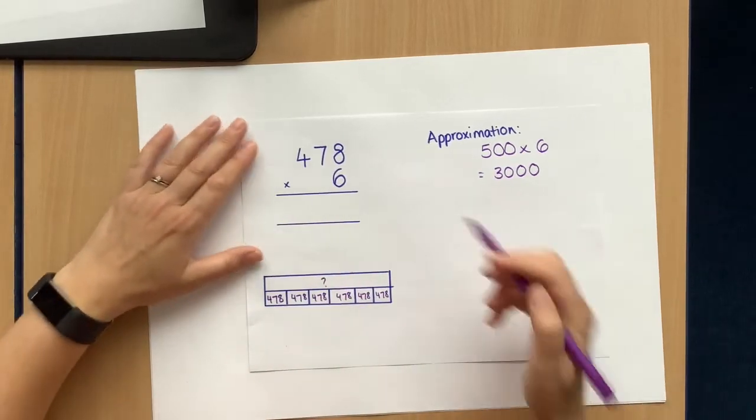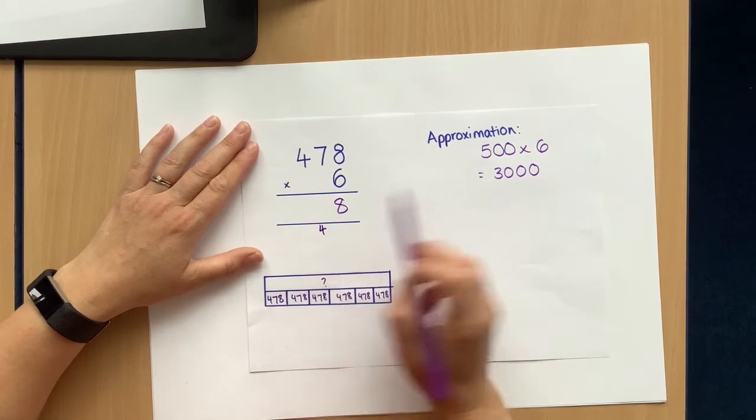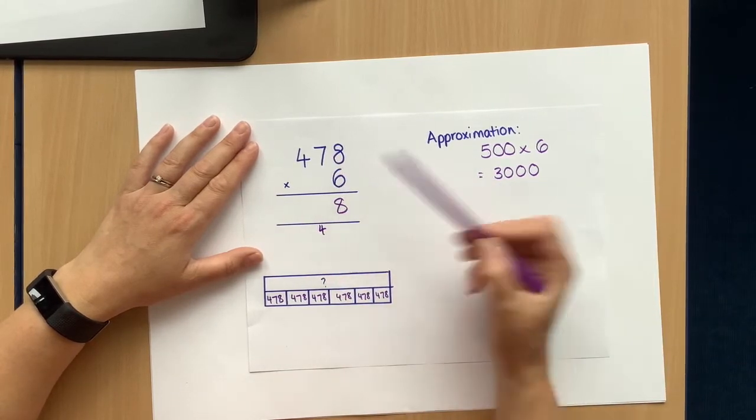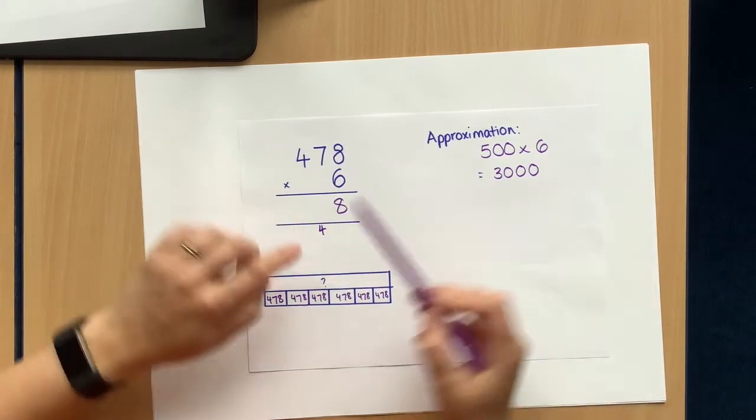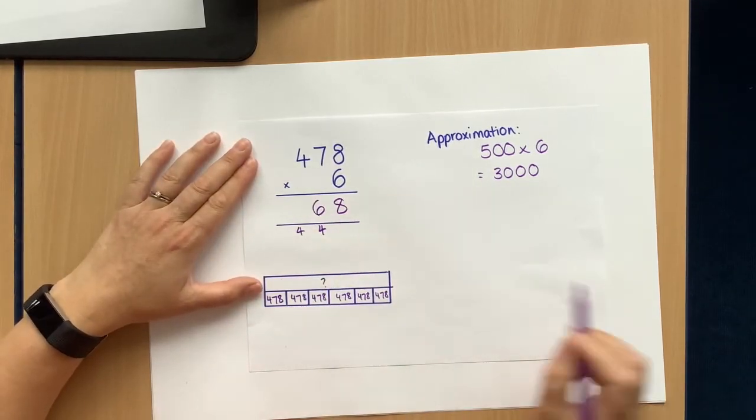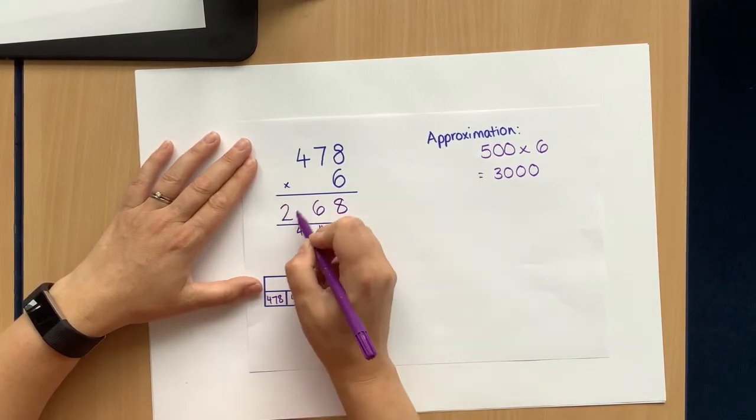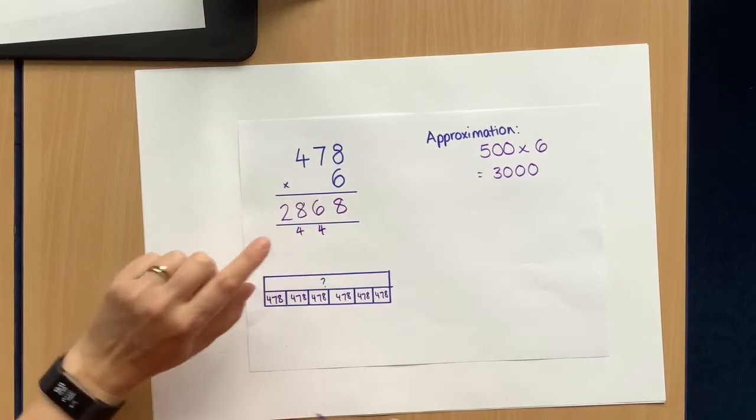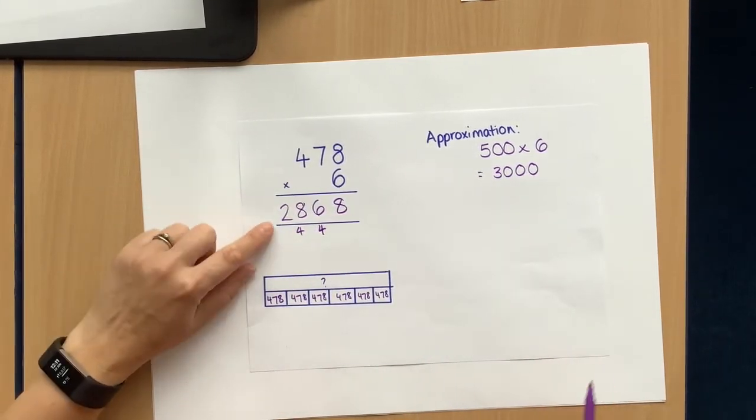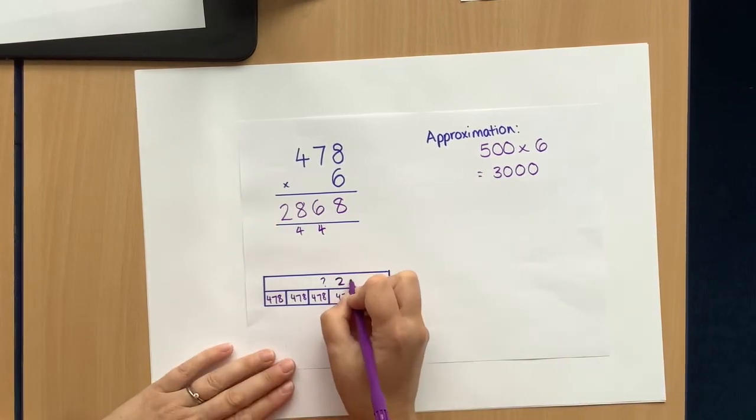I need to find the answer. So 6 times 8 is 48, which is 4 tens and 8 ones. 7 tens times 6 is 42 tens. Add those 4 tens, it gives us 46 tens, which is 400s and 6 tens. 4 hundreds times 6 is 24 hundreds. Add those 400s, it gives us 28 hundreds, which is 2 thousands and 8 hundreds. So I think that's the answer. The approximation looks about right.